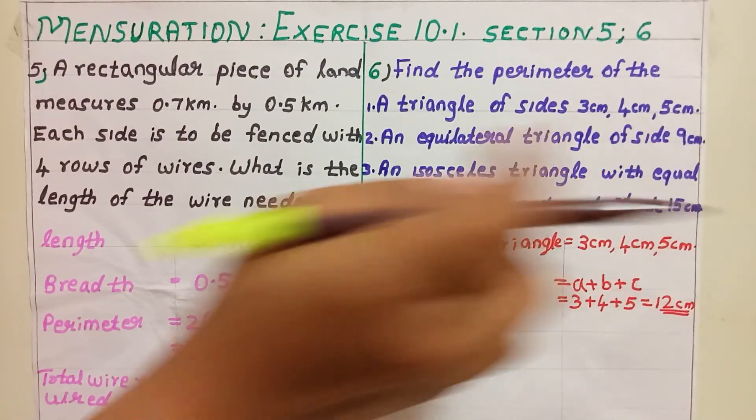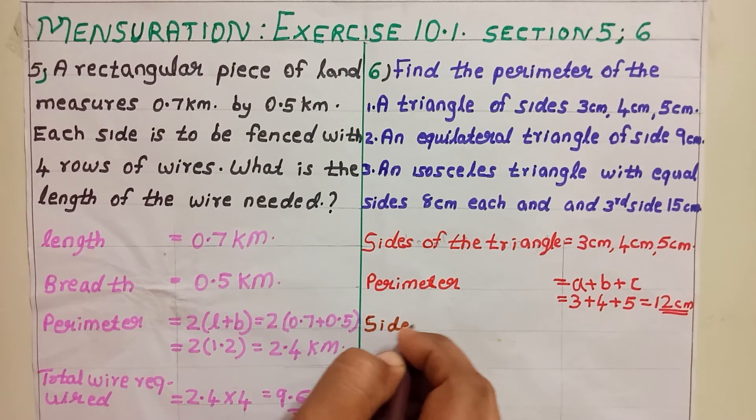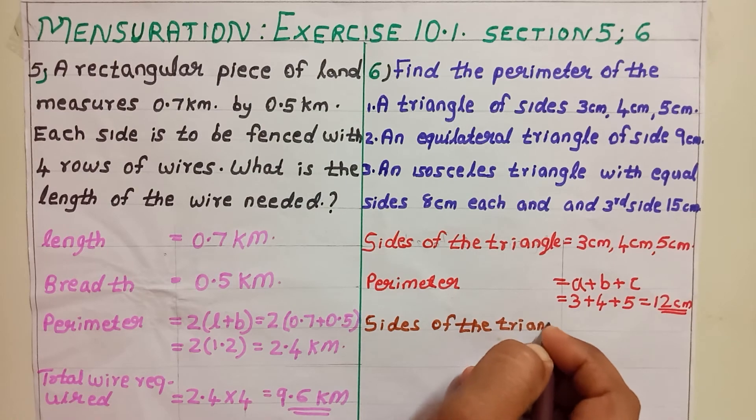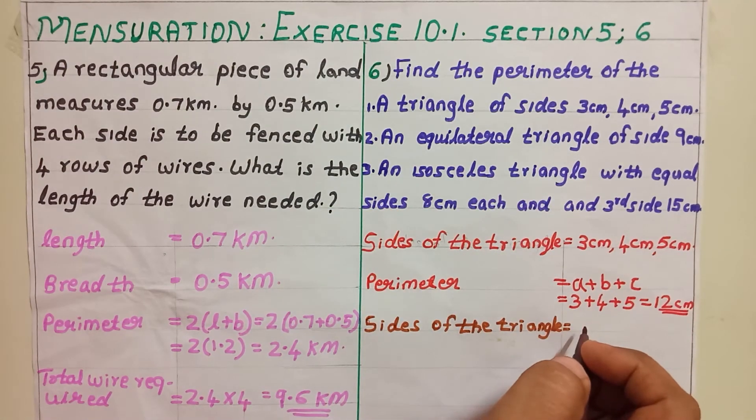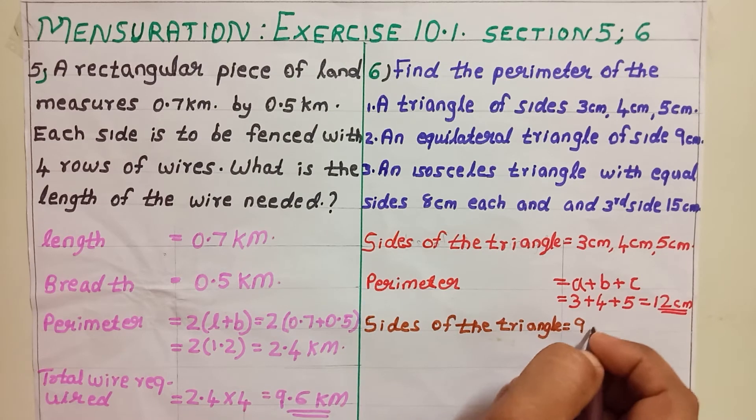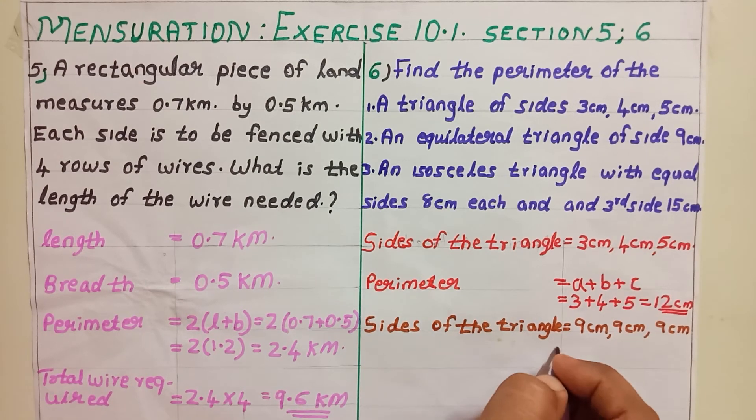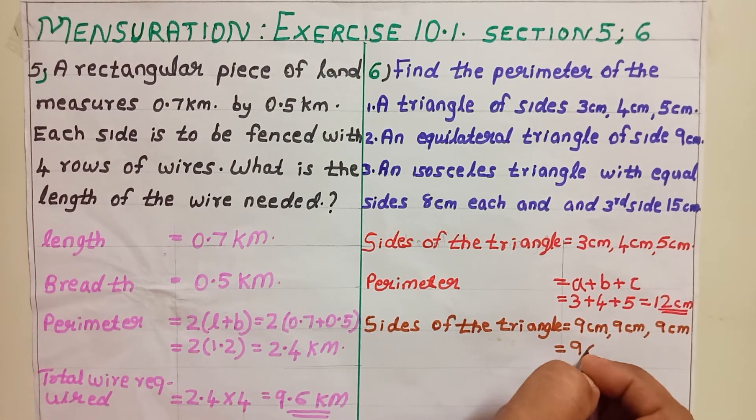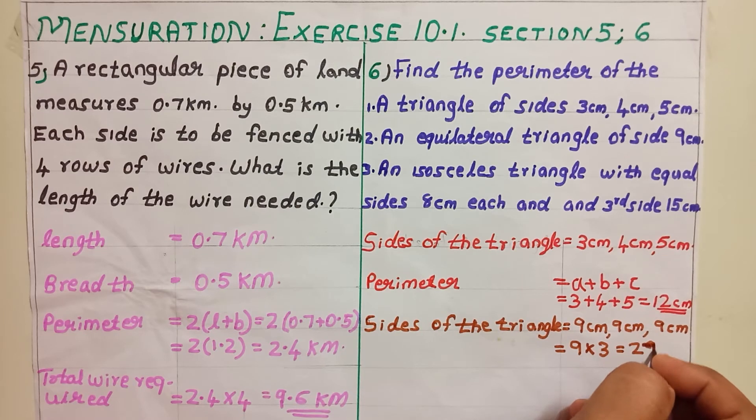Next one. Equilateral triangle of side 9 centimeter. So, sides of the triangle equal to... Since it is an equilateral triangle, we can say that all sides are equal. That means 9 centimeter, 9 centimeter, 9 centimeter. That is equal to 9 is repeating 3 times, 9 into 3 equal to 27 centimeter.